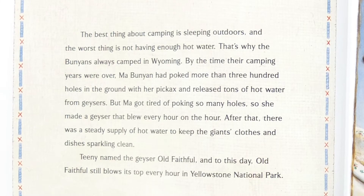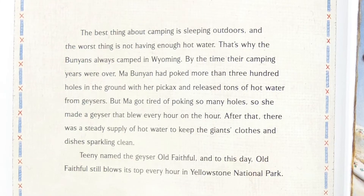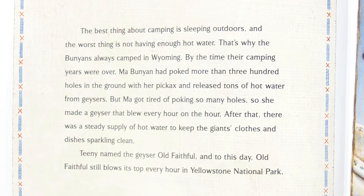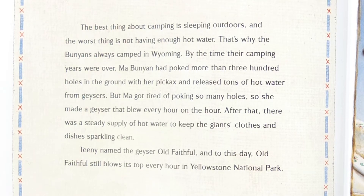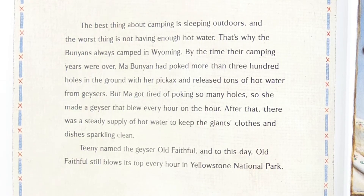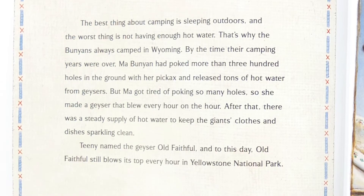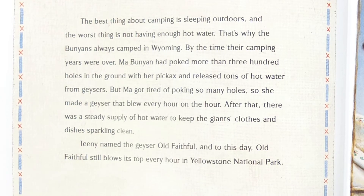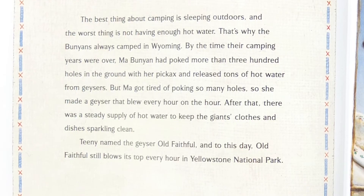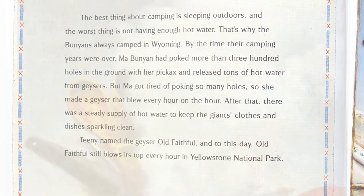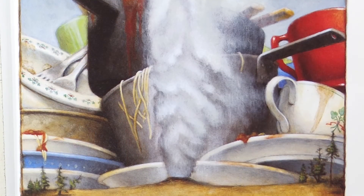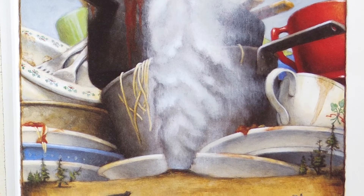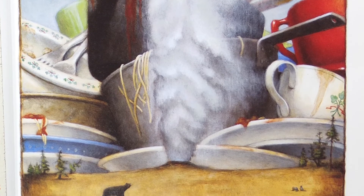The best thing about camping is sleeping outdoors. The worst thing is not having enough hot water. That's why the Bunyans always camped in Wyoming. By the time their camping years were over, Ma Bunyan had poked more than 300 holes in the ground with her pickaxe and released tons of hot water from geysers. But Ma got tired of poking so many holes, so she made a geyser that blew every hour on the hour. After that, there was a steady supply of hot water to keep the giant's clothes and dishes sparkling clean. Teenie named the geyser Old Faithful, and to this day, Old Faithful still blows its top every hour in Yellowstone National Park.